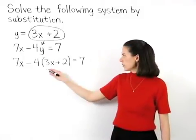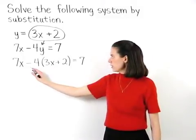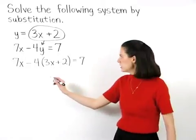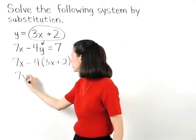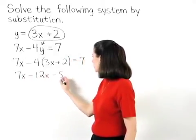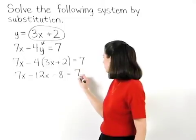Now we can solve for x by first distributing the negative 4 through the parentheses to get 7x minus 12x minus 8 equals 7.